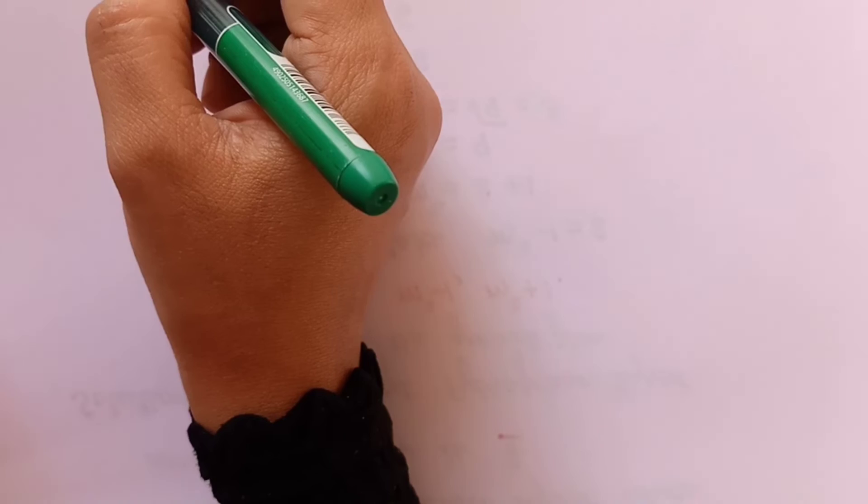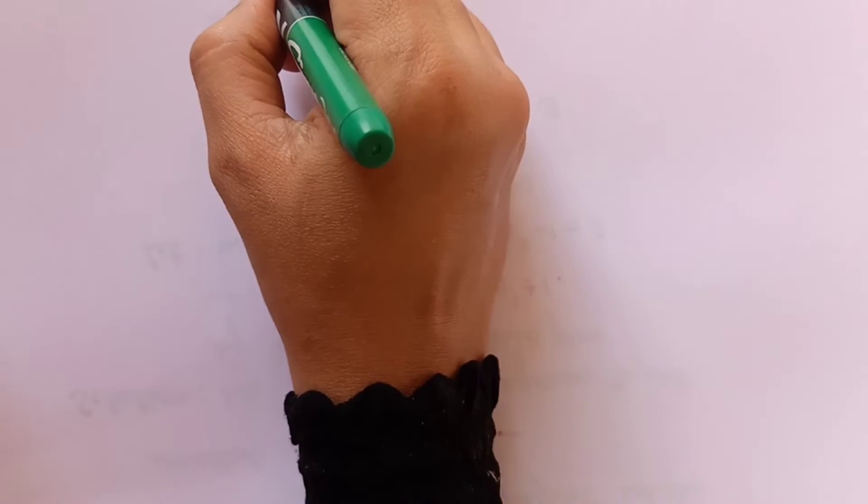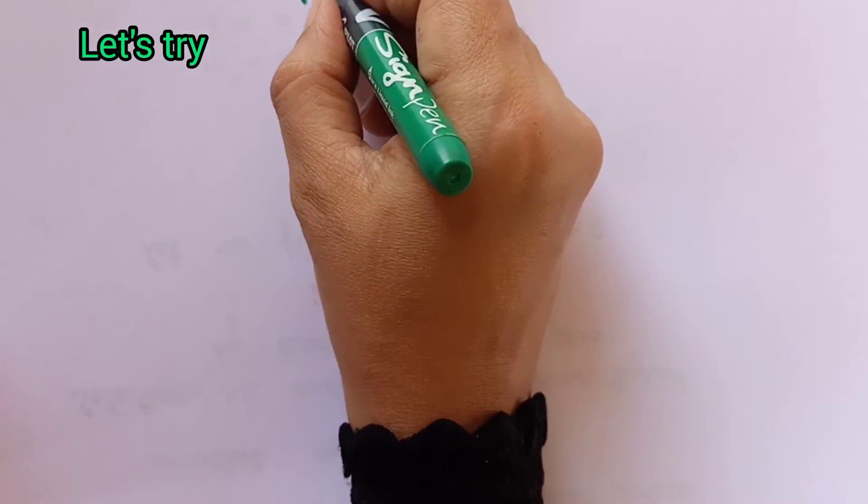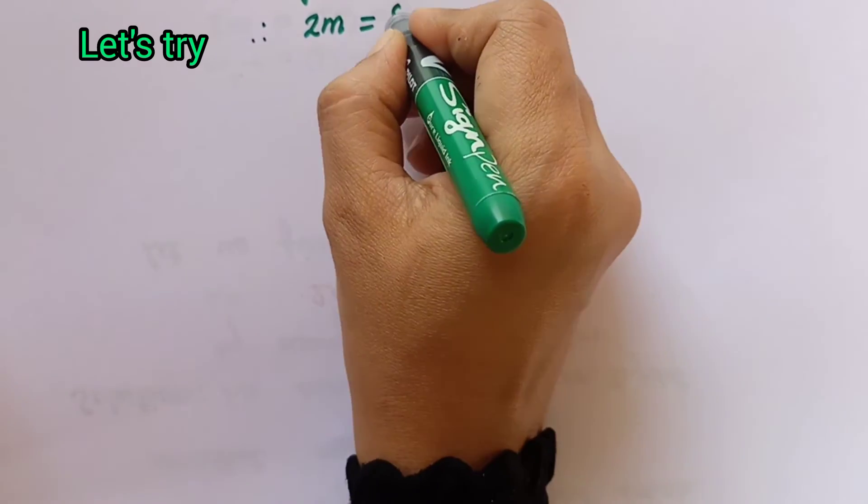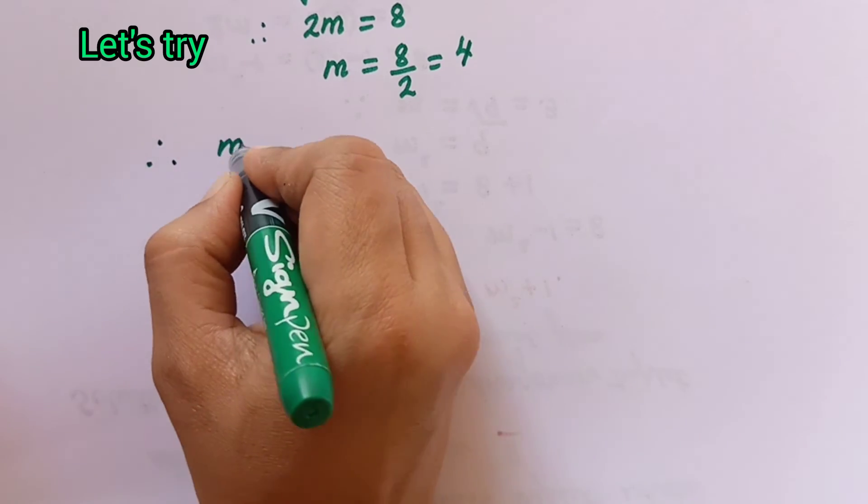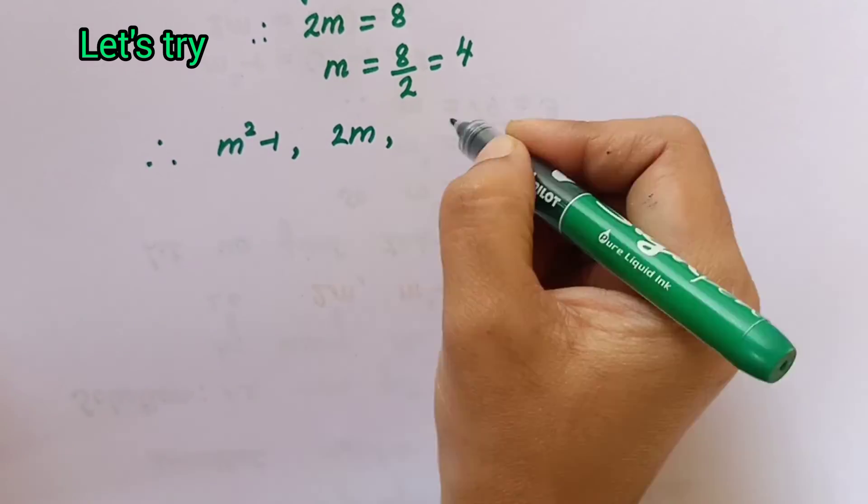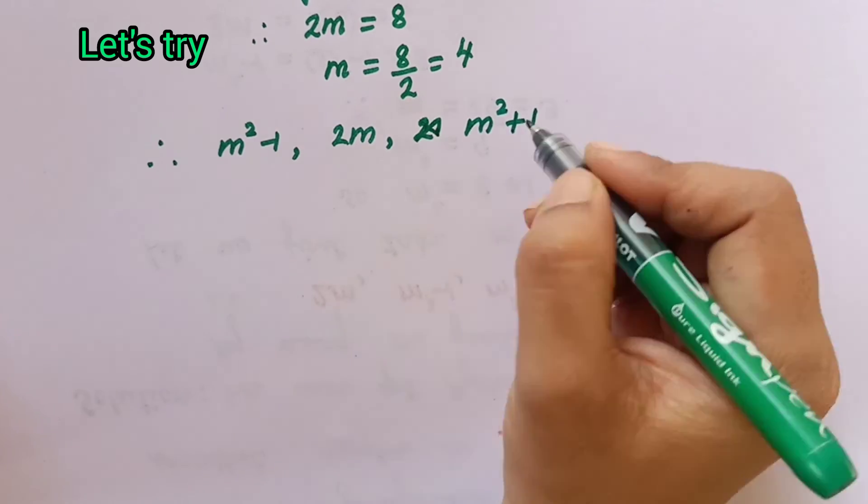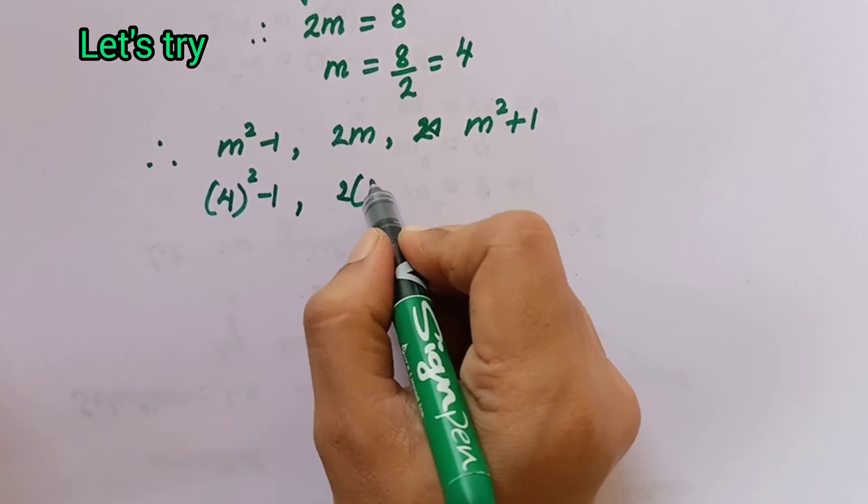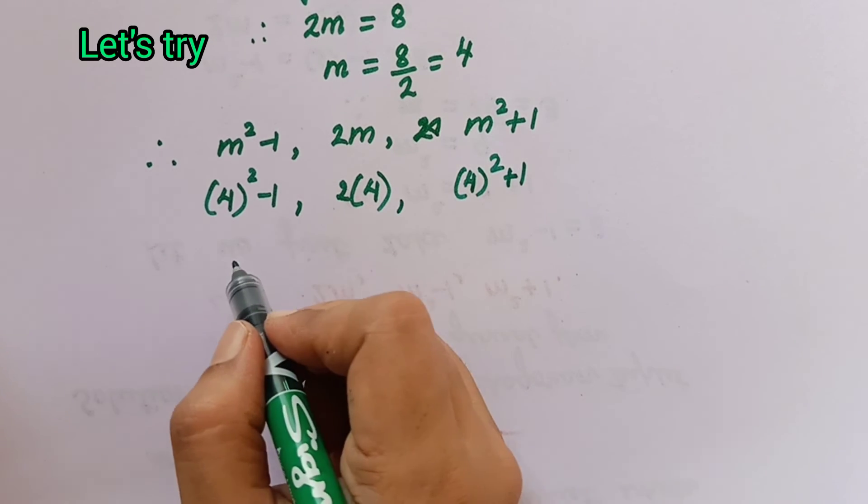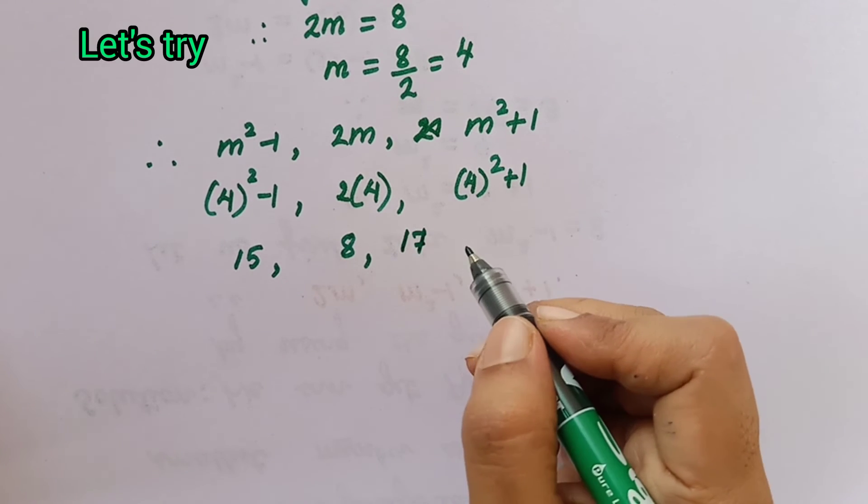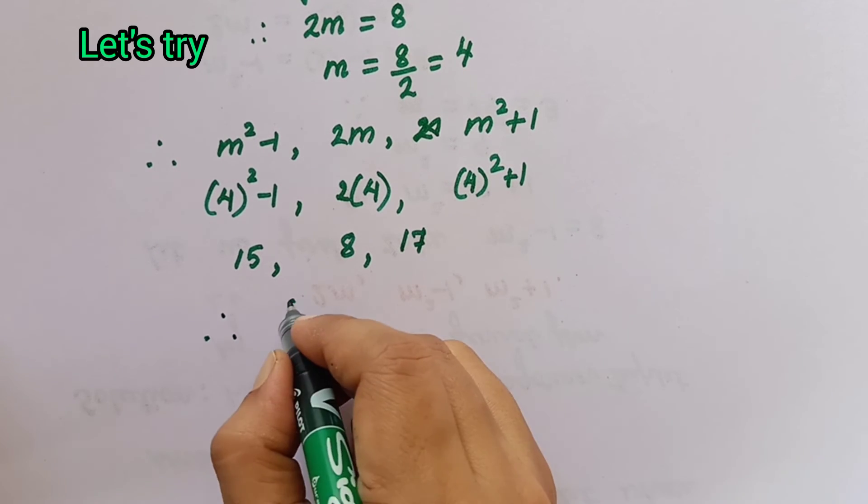Now, let us try with 2m equals 8. Therefore, we get the value m equals 8 by 2 which is equal to 4. Now we'll substitute this 4 in m square minus 1, 2m and m square plus 1. So 4 square minus 1, that is 16 minus 1, is 15. 2 into 4 is 8 and 4 square is 16, 16 plus 1 is 17.